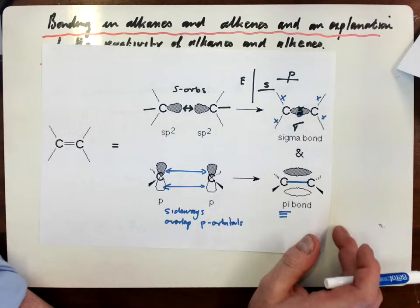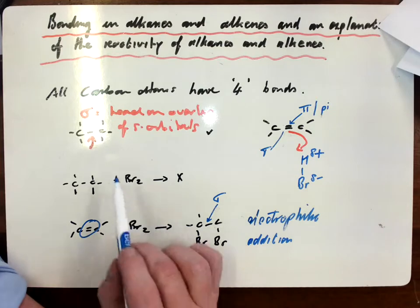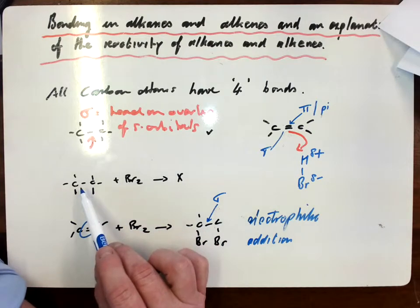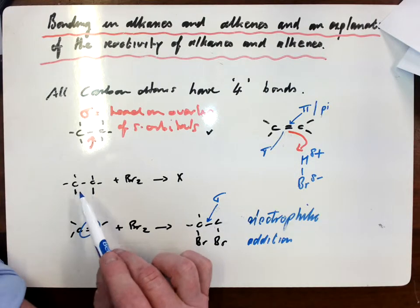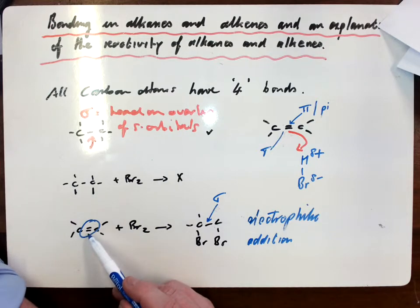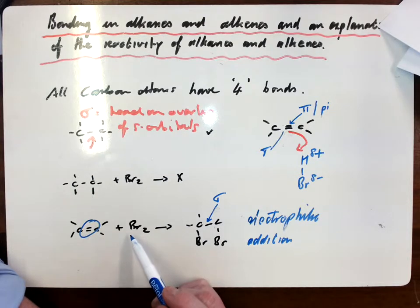You would then explain the reactivity of alkanes as being very unreactive because you have a very strong sigma bond here, which is an area of low dense negative charge and doesn't attract electrophiles. Whereas here, you've got that weaker pi bond and an area of high dense negative charge, which will indeed attract electrophiles.